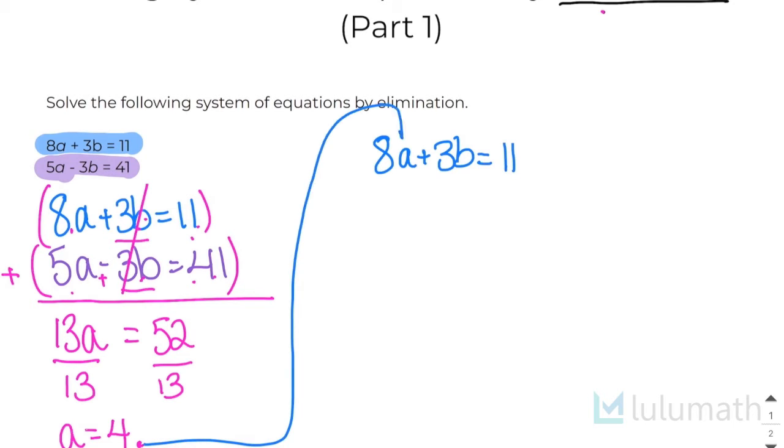8a plus 3b equals 11. And I'm going to substitute this 4 in right here. So let's do this in pink so you can see that that's going in for the a right here.